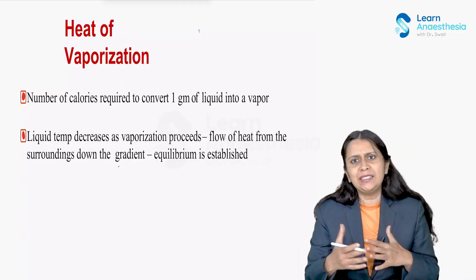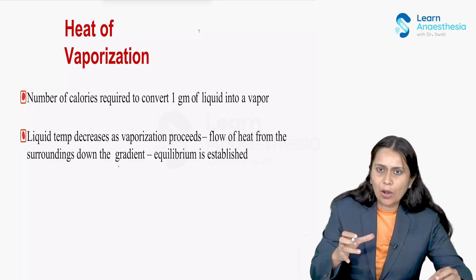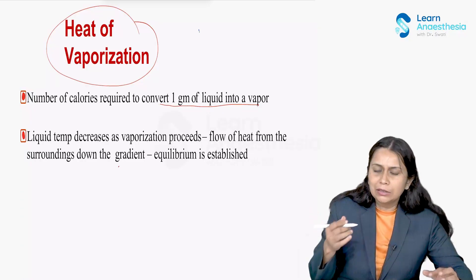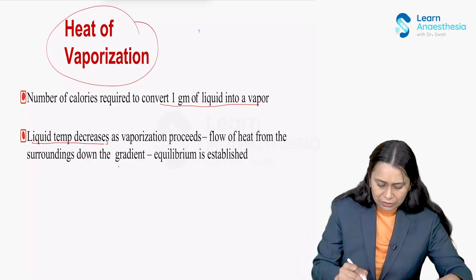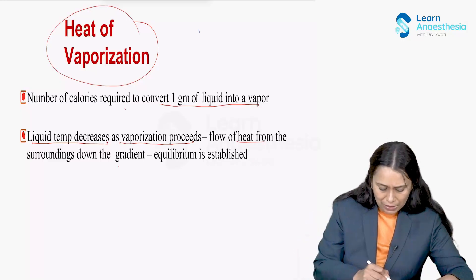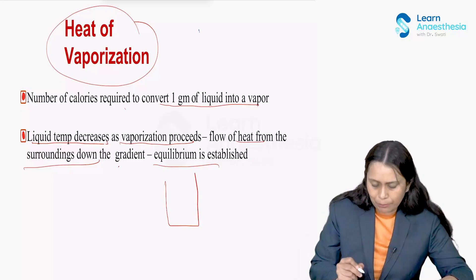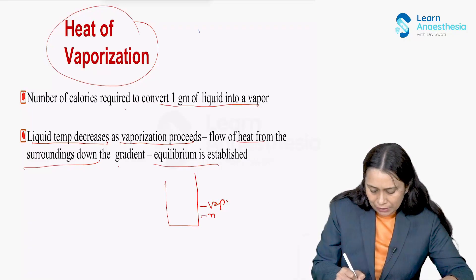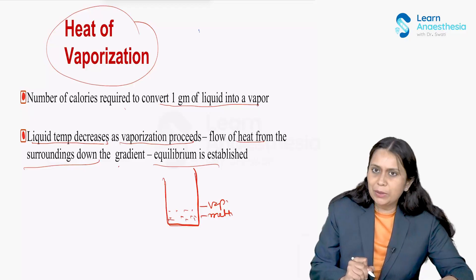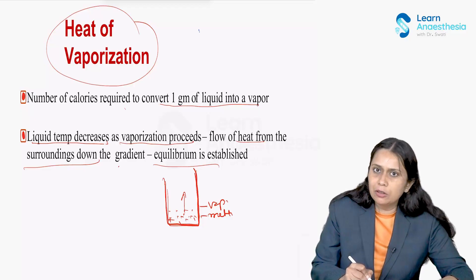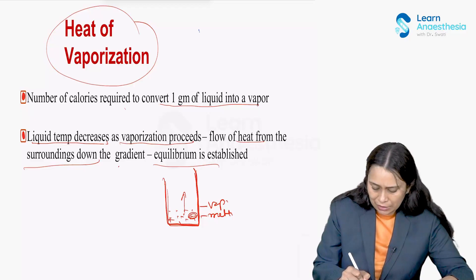When vaporization happens, calories are required to convert one gram of liquid into vapor — that is called heat of vaporization. When vaporization happens, cooling of the remaining liquid occurs. The liquid temperature decreases because the calories have been used as vaporization proceeds. Flow of heat from the surroundings down the gradient tries to establish equilibrium.